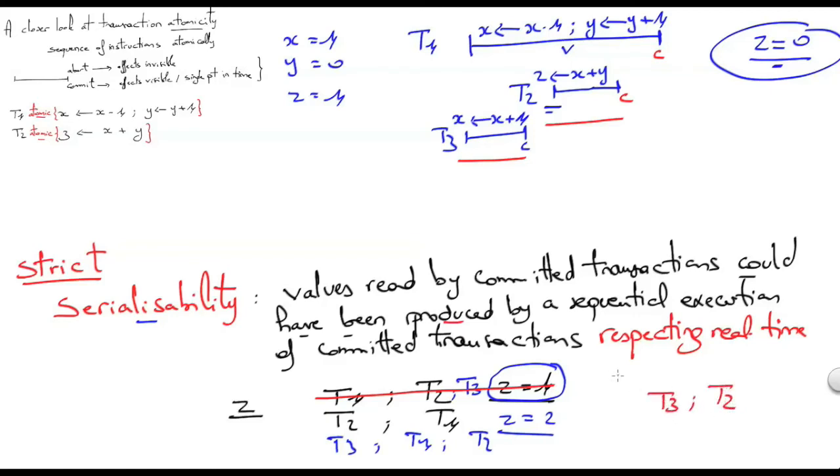This means that the option here is forbidden. The only options that are possible are all options where T3 comes before T2. So either T1 can come first or T1 comes here or T1 comes here, but in all cases T3 should come before T2. And it's easy to see that in this case the only option is z equals 2. And this is strict serializability.